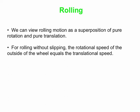Our second point is that for rolling without slipping, if you look at a point on the very outside of the wheel, the speed associated with the spinning motion — the rotational speed at that point — is equal to the translational speed of the entire wheel. And that has some implications for net velocities at various points on the wheel.